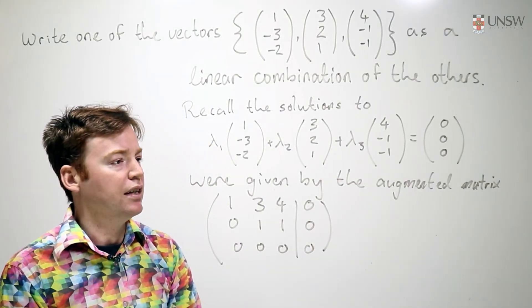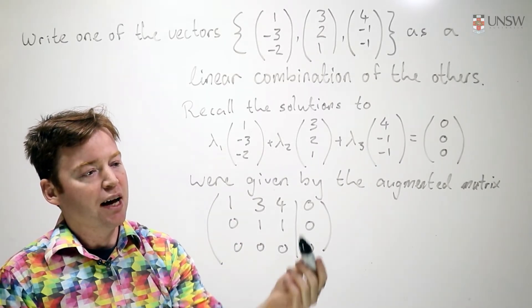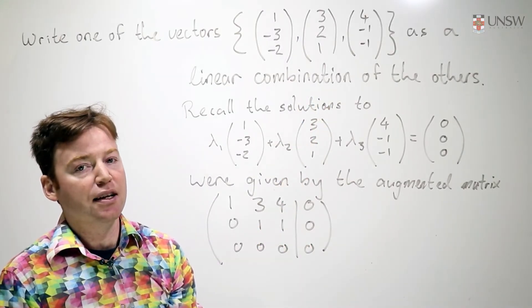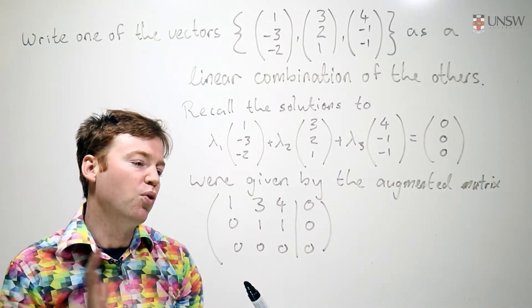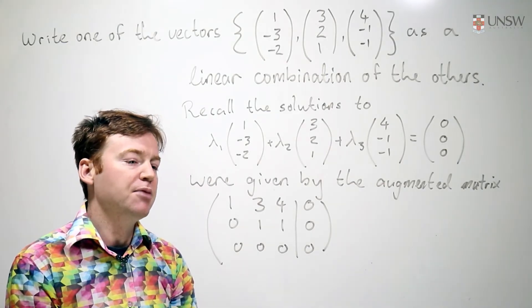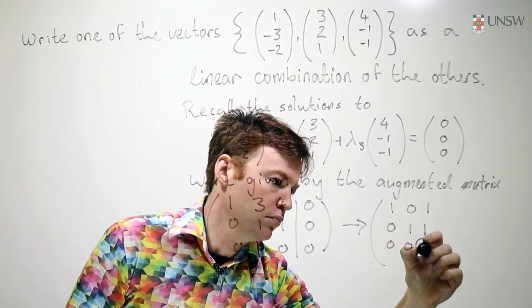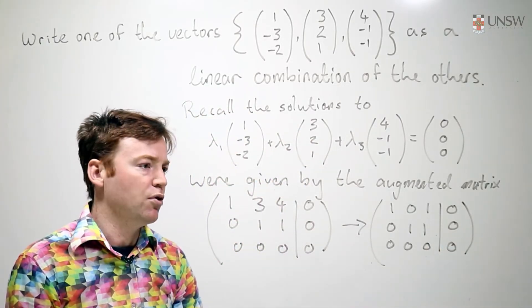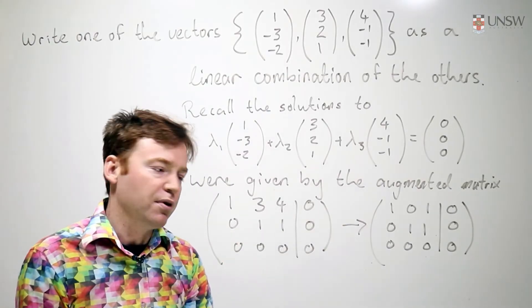This is where we were at in the previous question. We only needed to determine how many solutions there were to this matrix to know that this was a linearly dependent set. But in order to actually write one of the vectors as a linear combination of the others, we need to go all the way and actually solve this system of linear equations. So I've omitted the row operations here, but I'll assume you know how to get from row echelon form to reduced row echelon form.